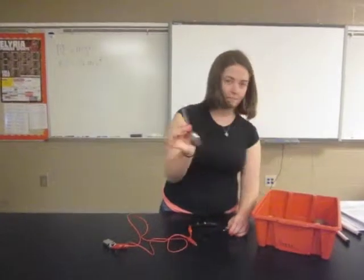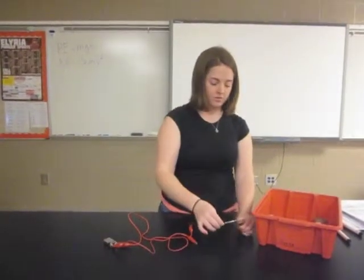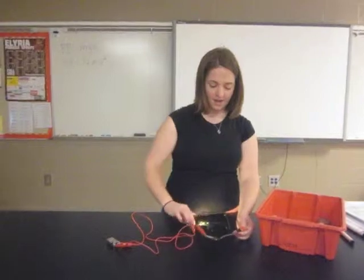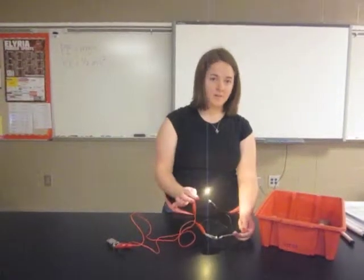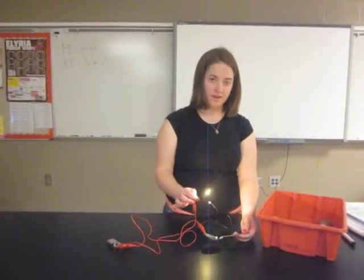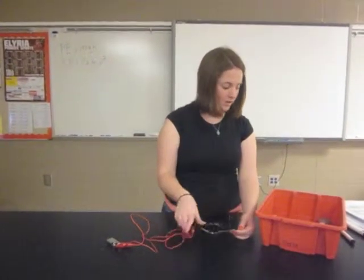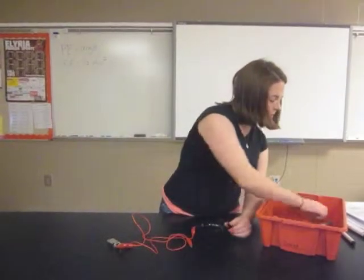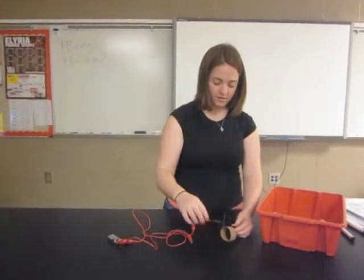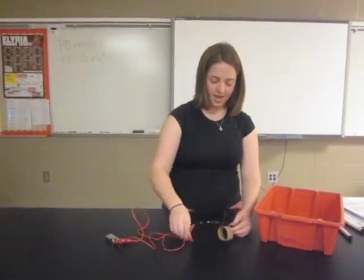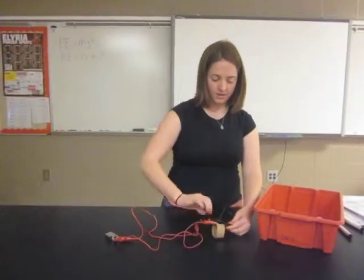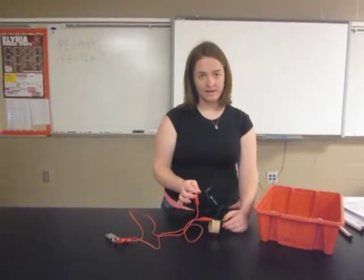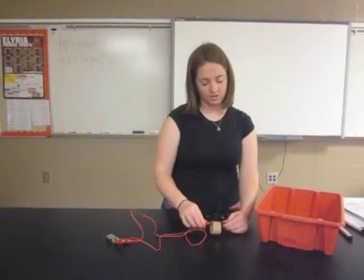Next we can try a metal spoon. We can hook it to the front and the back. We see the light bulb light up, so it is a conductor of electricity. We have a couple more to try. We can do a piece of cardboard on each side. It does not light up, so it is an insulator of electricity.